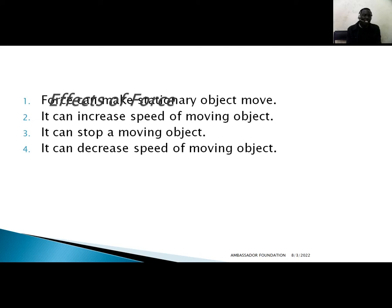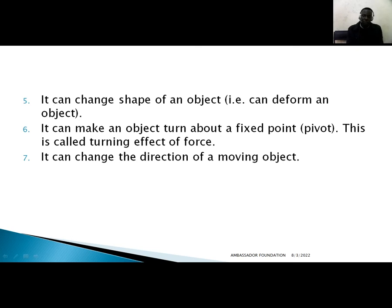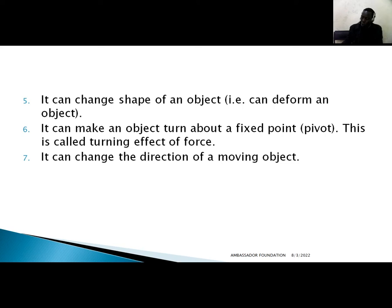When stating the effects of force we use words of possibilities — we use the word 'can.' Force can make a stationary object move. It can increase the speed of a moving object. It can stop a moving object. It can decrease the speed of a moving object. It can accelerate a moving object. It can change the shape of an object. It can make an object turn about a fixed point — this is called the turning effect. It can change the direction of a moving object.